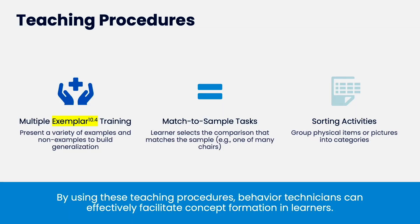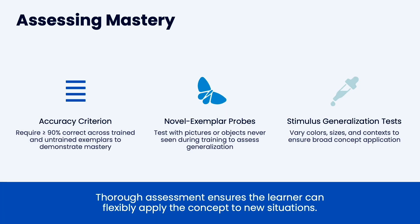Once you're seeing emergent relations, you can start teaching concepts. Present a variety of examples and non-examples to build generalization — say, 'that's a tree, that's a tree, that's a bush, that's a tree,' showing lots of different trees. You can use matching to sample, putting an array of things for them to match, or sorting activities by physical category. For mastery, we typically look for 90% accuracy across untrained examples.